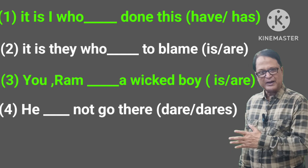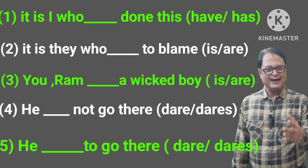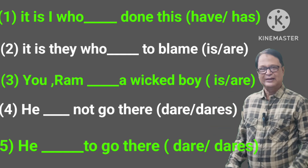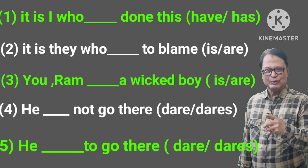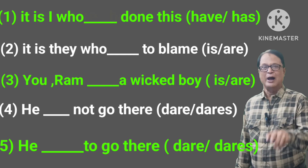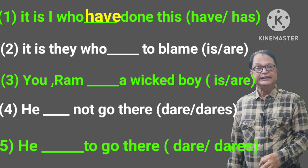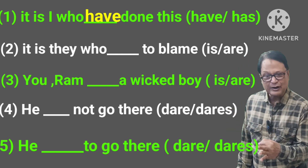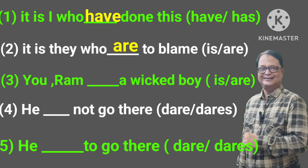Last sentence in this set: He — dash — to go there, dare or dares? Now look at the sentences written here. Number one: It is I who — have done this. Because 'I' comes before 'who', we follow 'I', so 'have'. Number two: It is they who — are to blame. Here 'they' precedes 'who', so we follow 'they' — 'are to blame'.